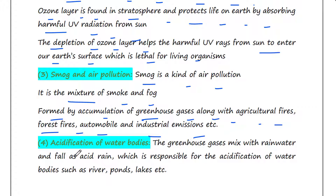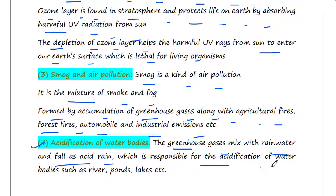The next effect is acidification of water bodies. Greenhouse gases mix with rainwater and fall as acid rain, which is responsible for the acidification of water bodies such as rivers, ponds, and lakes.